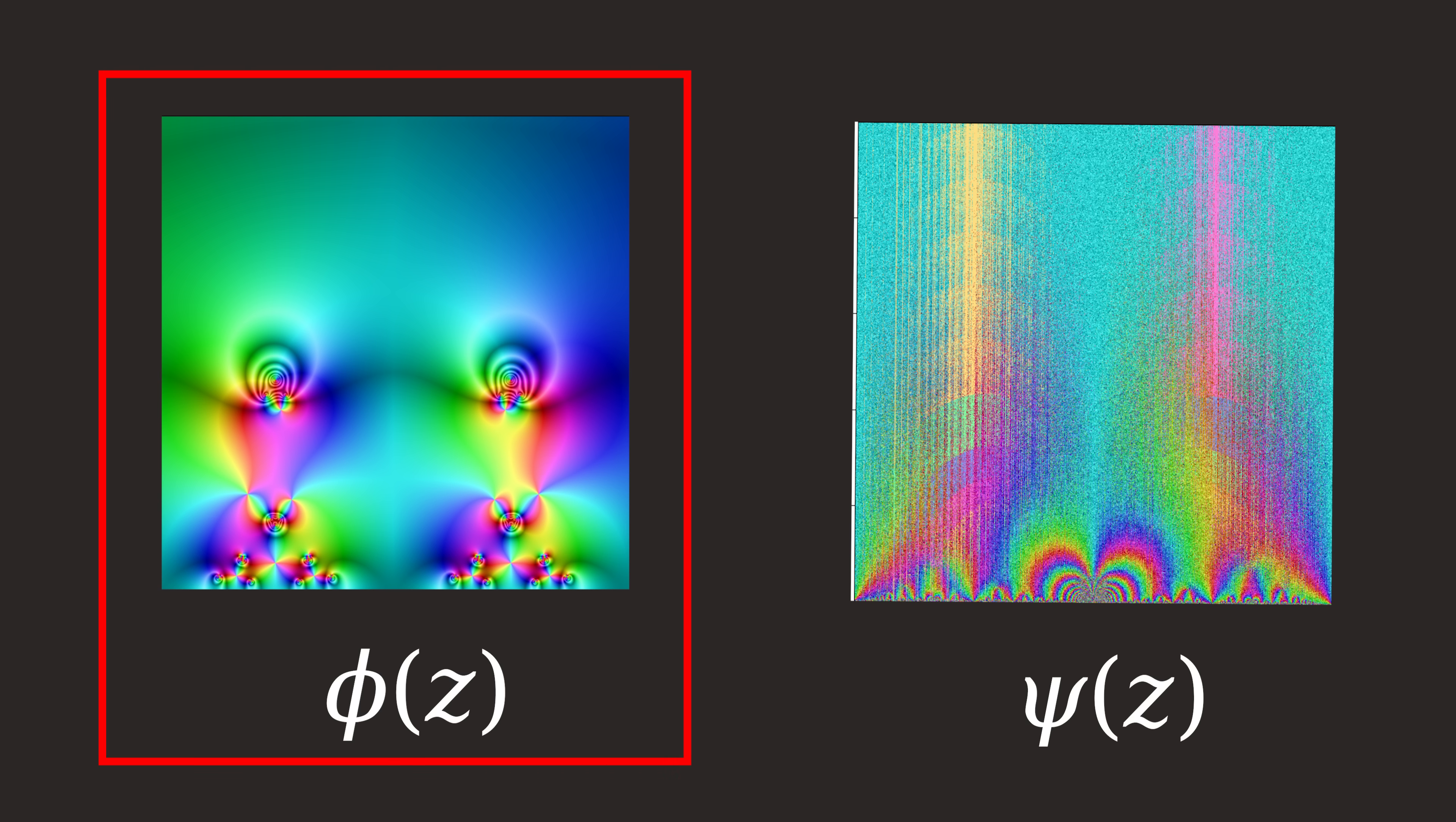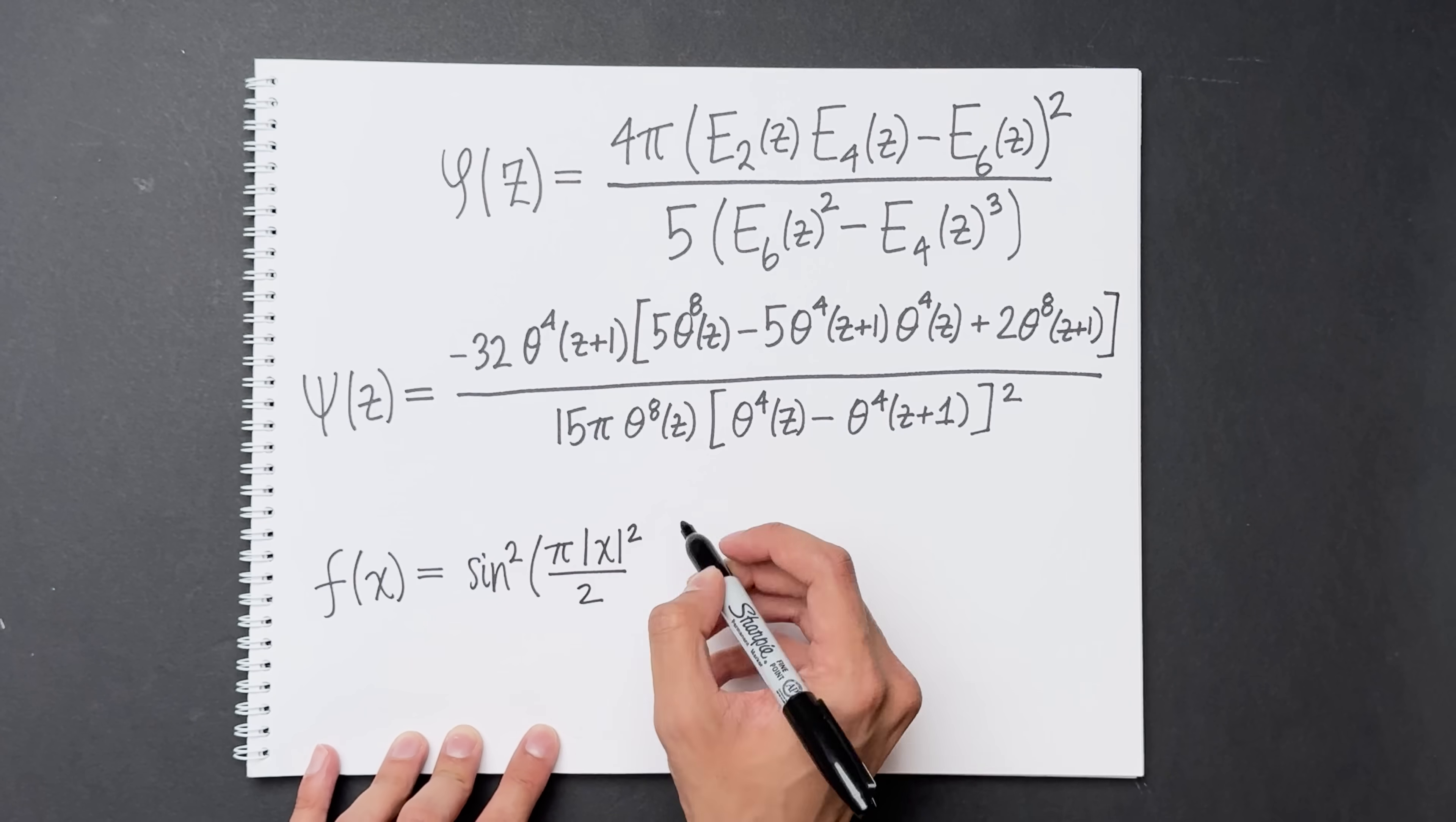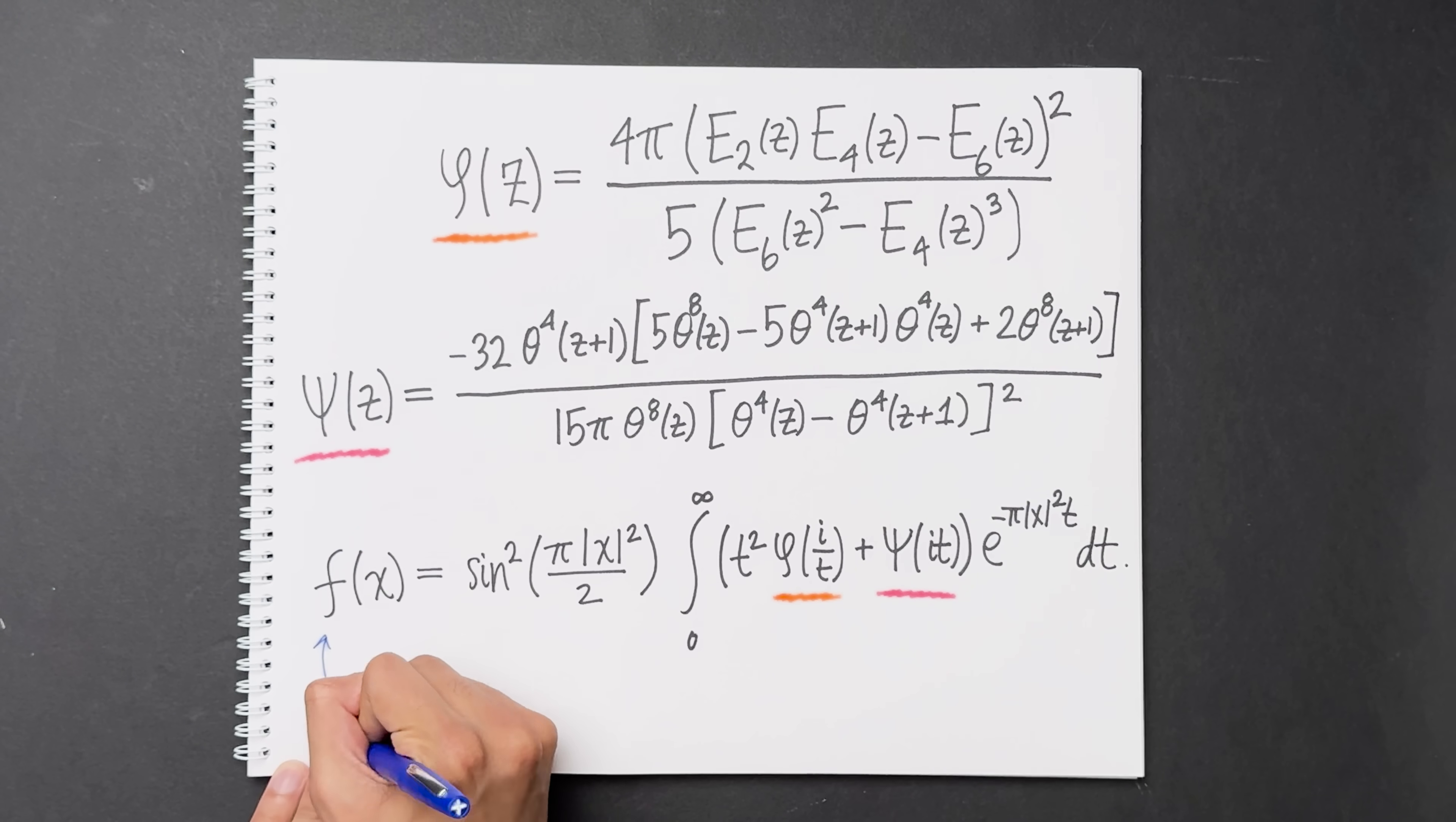To define the magic function, we first need to define two auxiliary functions, phi and psi. The first function, phi, is defined using the Eisenstein series. The second function, psi, is defined using the Jacobi Theta function. Here's the magic function f of x. It's defined as sin² of π times the norm of x squared over 2, times the integral from 0 to infinity of t² φ(i/t) + ψ(it) times e^(-π norm of x squared t) dt. The φ is underlined in orange and the ψ is underlined in pink. This is the magic function we're after. This x is an element of R⁸, so it's actually a vector.